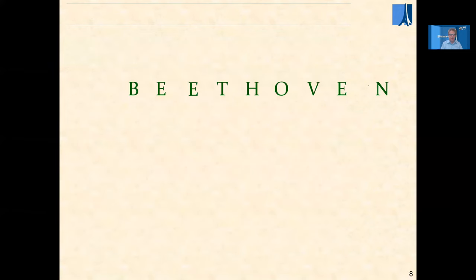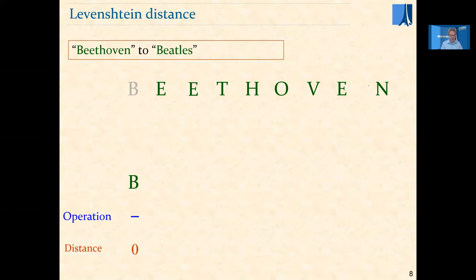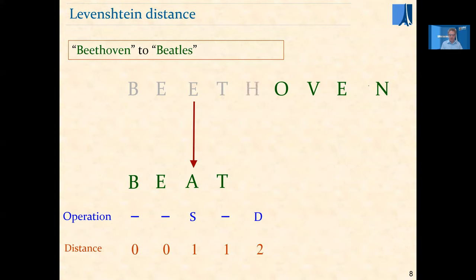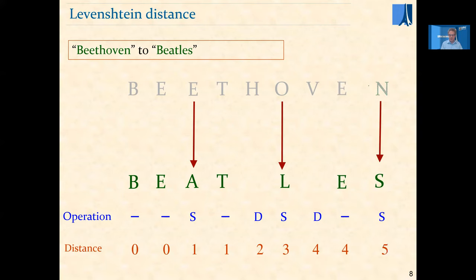To show Beethoven to the Beatles step by step: we keep the B, distance so far is zero. We keep the E. Then we turn E into A — a substitution, distance is one. We keep the T. The H goes away — a deletion. The O gets turned into L — a substitution. The V goes away — another deletion. The E remains, and N is turned into S. We get a distance of five. That's the result the algorithm produces.